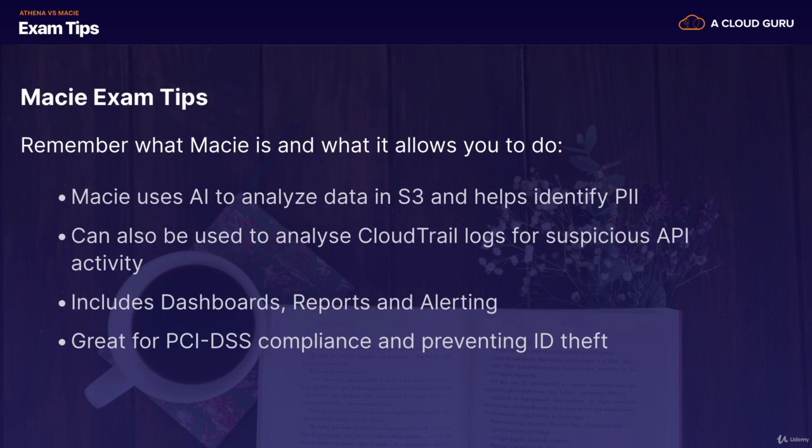Whereas Macie is essentially a security service. It uses AI to analyze your data in S3 and help identify personally identifiable information, or PII. It can be used to analyze CloudTrail logs for suspicious API activities. It includes dashboards, reports, and alerting, and it's great for PCI DSS compliance and for preventing ID theft. If you know the difference between Athena and Macie going into your exam, you're going to do very, very well.